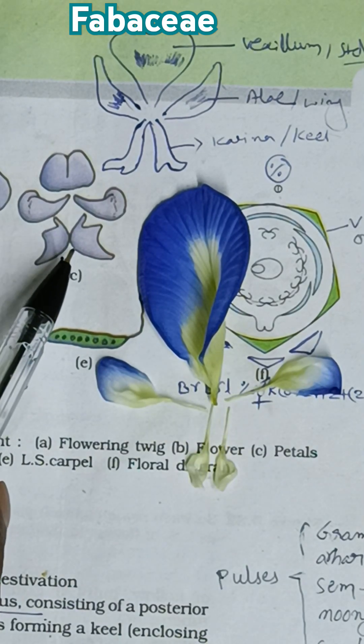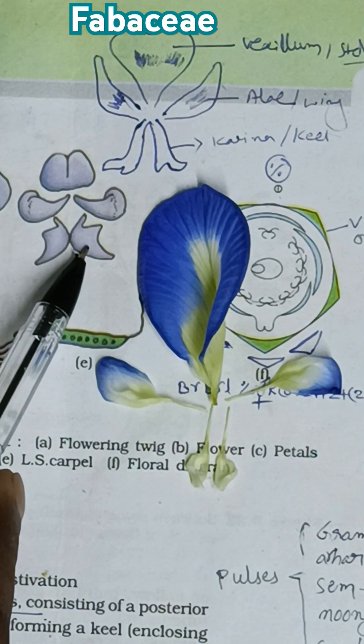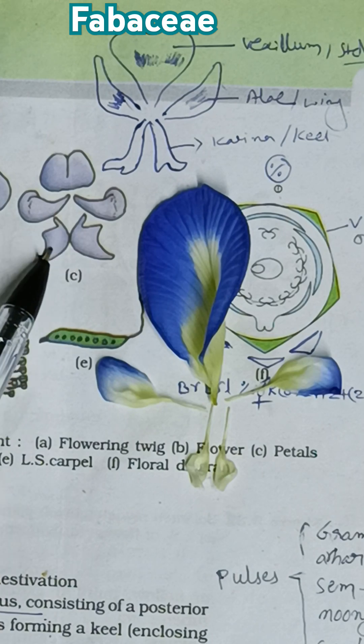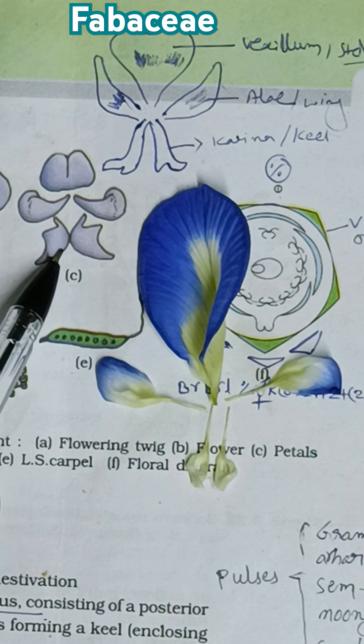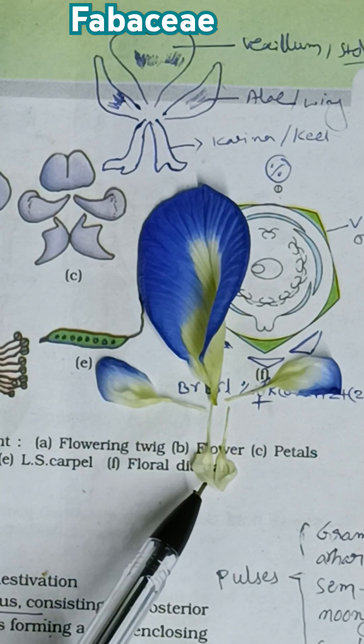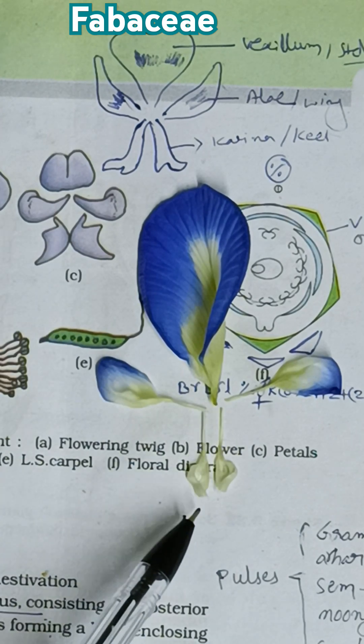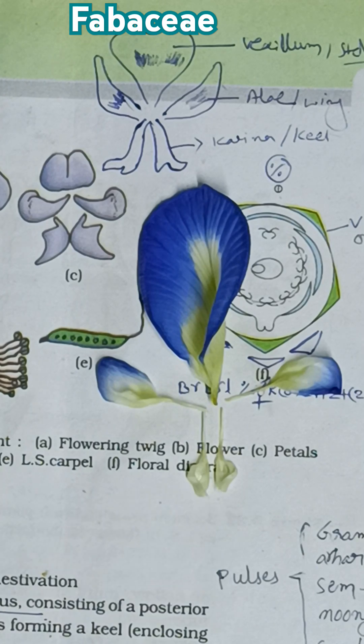Next, at the anterior end of this flower, you can see small petals which are in a boat shape. These are called keel petals. Here you can see these are the keel petals, which have a boat shape.